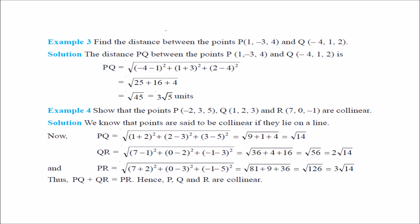Let us take an example. We have to find the distance between two given points. Using the distance formula — this minus this whole square, plus this minus this whole square, plus this minus this whole square — the answer is 3√5.